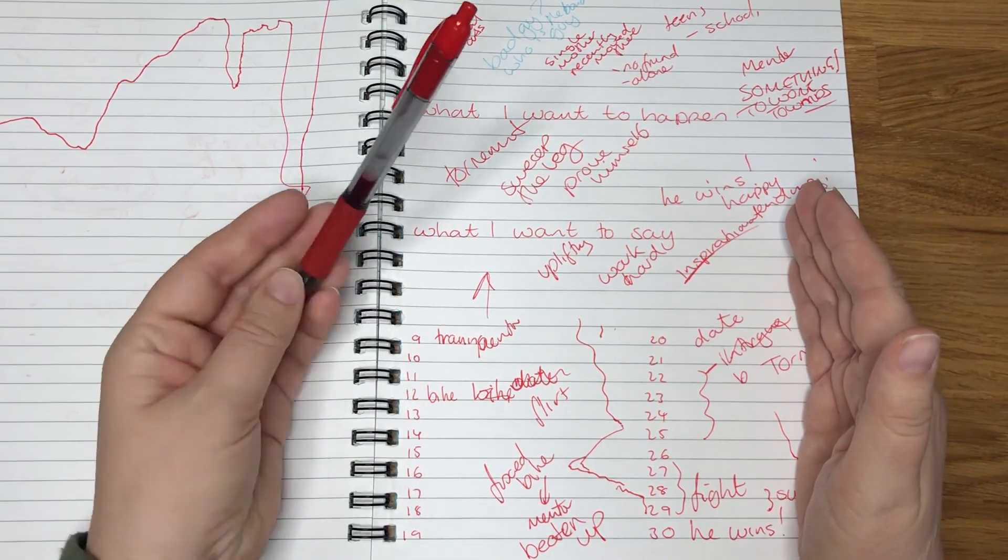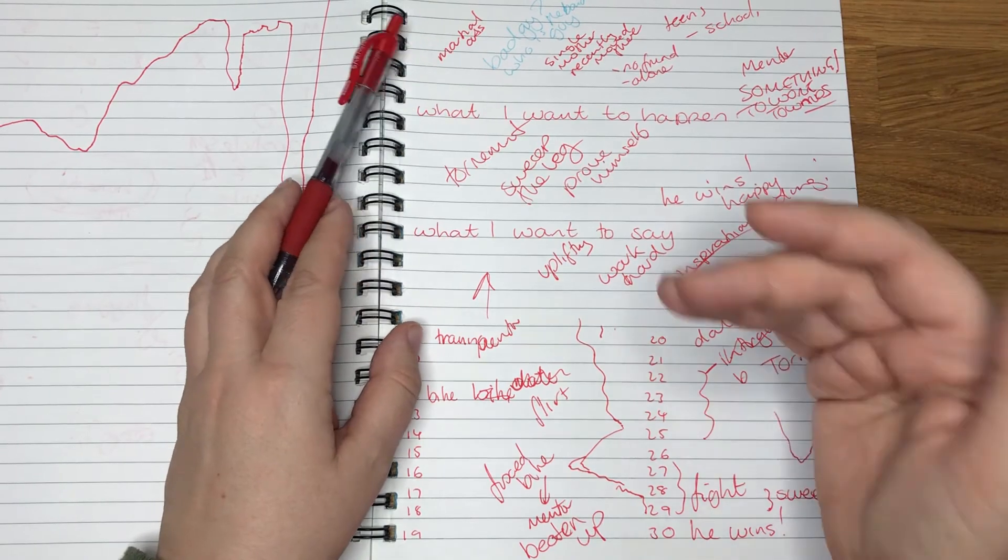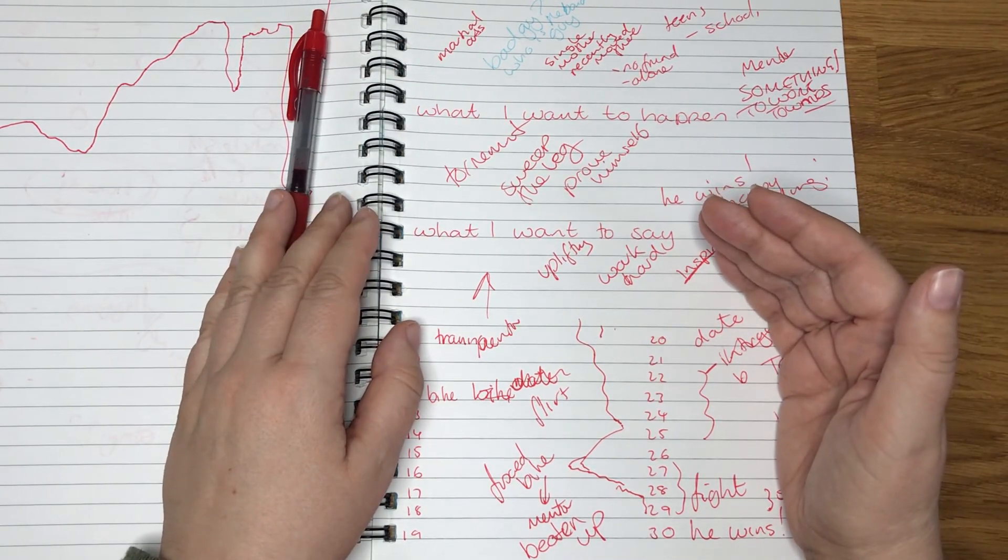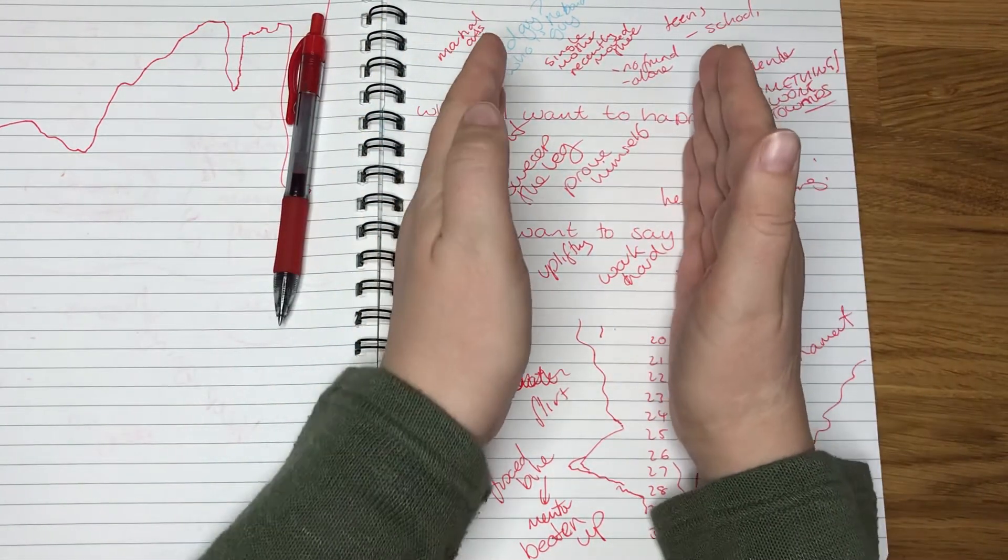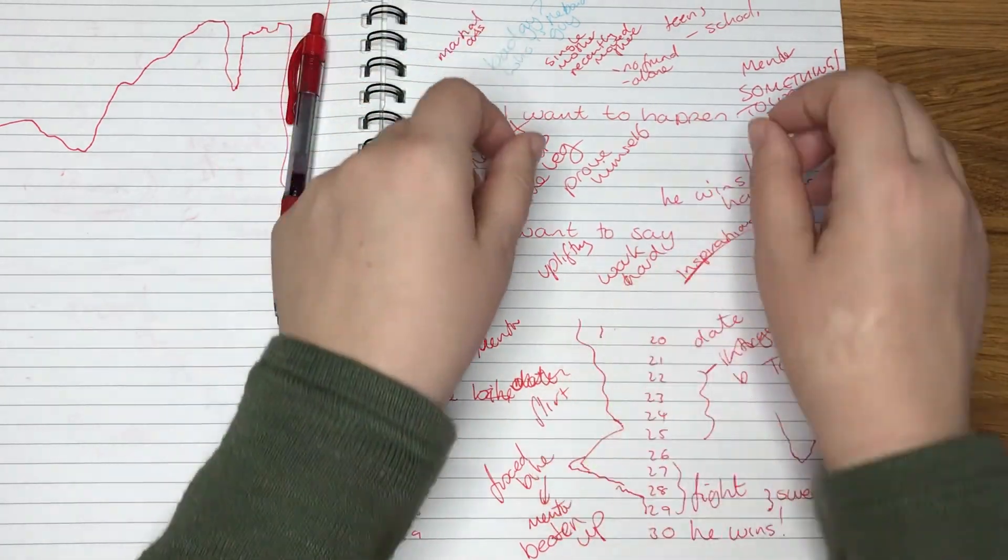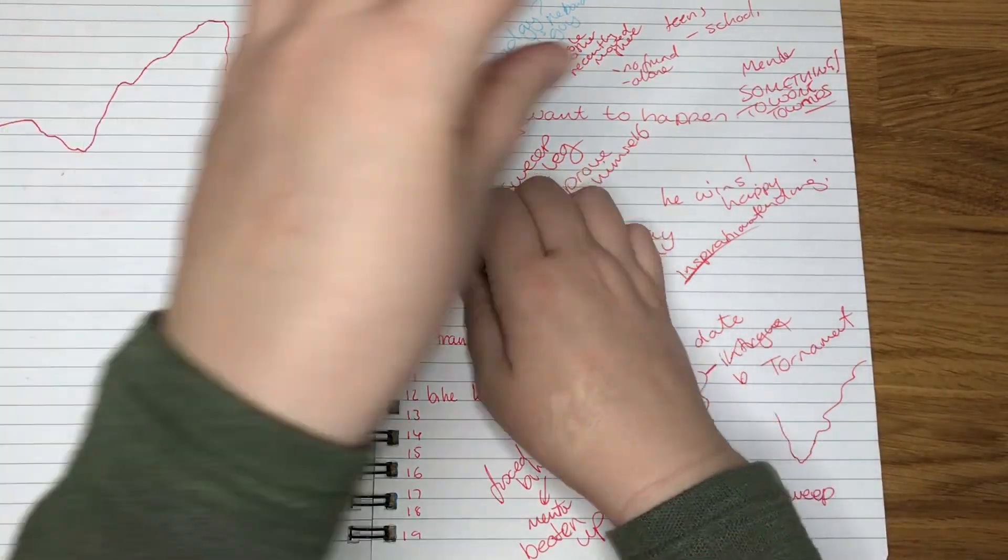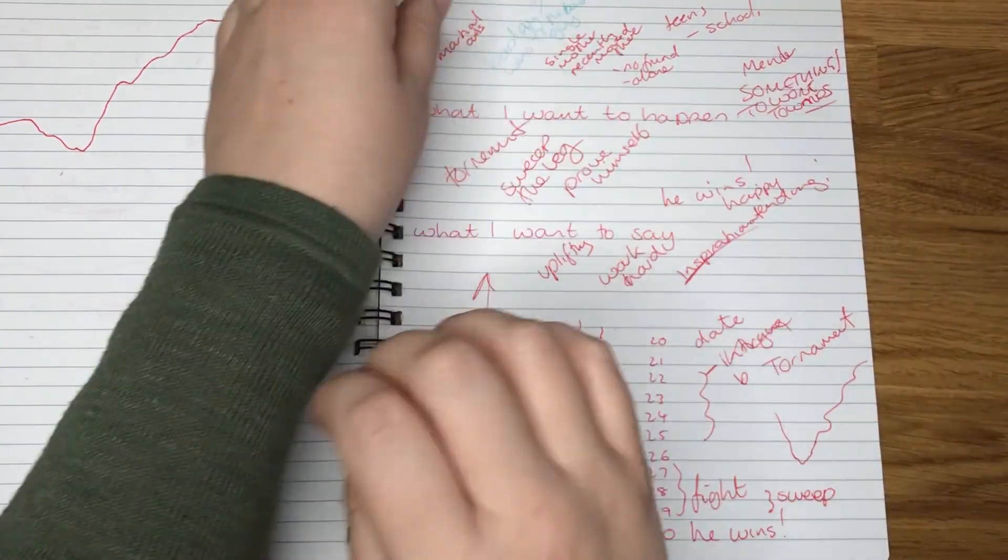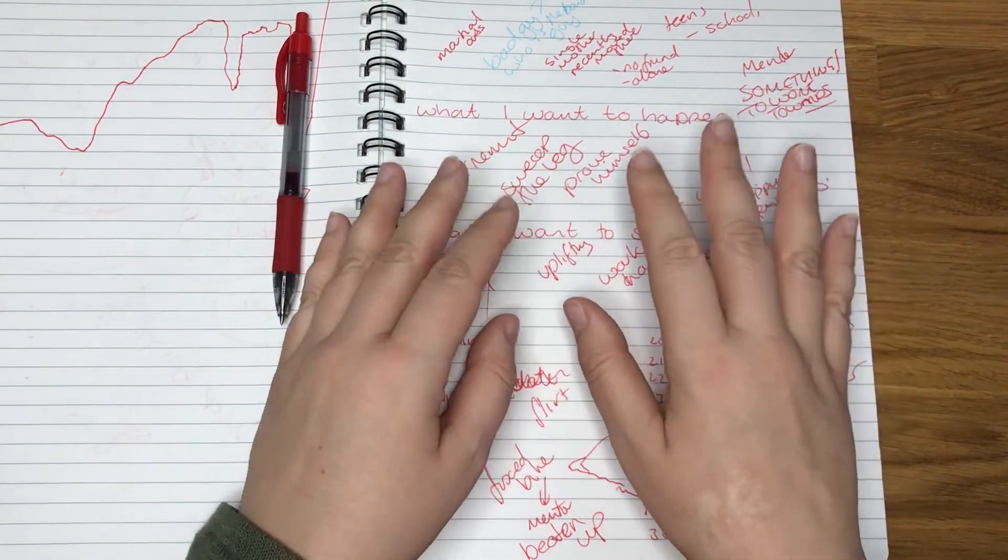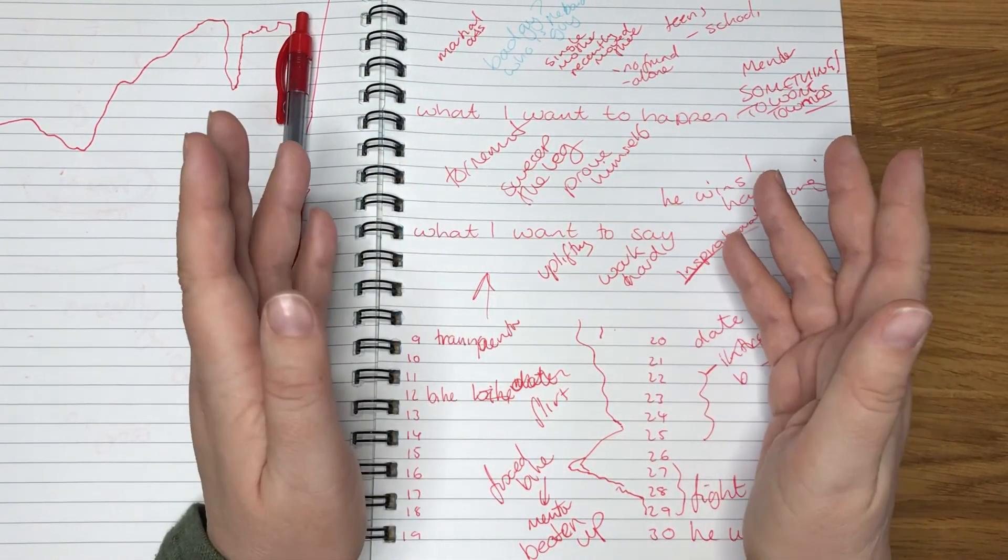But sit down, bit of paper, a pen, and just get all the ideas that you have down there. Put them on. That's another good one. Put them all on post-it notes and then you can move things. Actually, I want this bit to happen here and this bit to happen here. That's a good way of doing it as well, just to get a really good idea and sense of what you want.